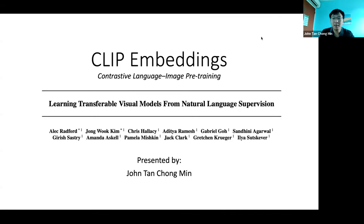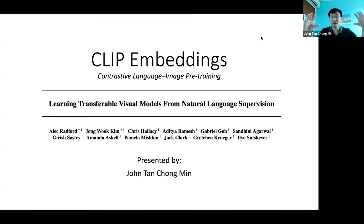What's an embedding? An embedding is a representational space whereby concepts can be represented as n numbers, and these n numbers form a vector space. Basically, what CLIP embeddings do is to merge the world of image and text.